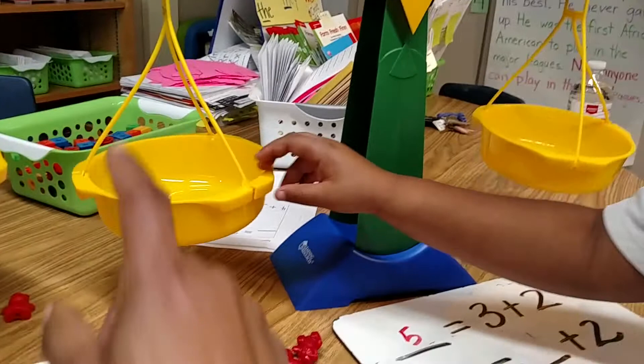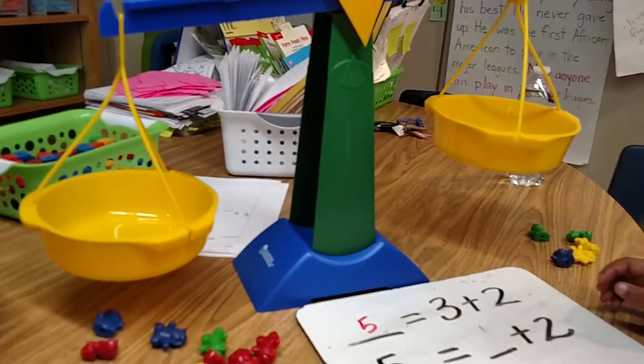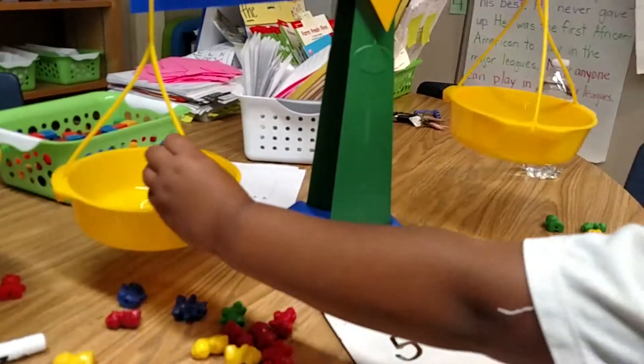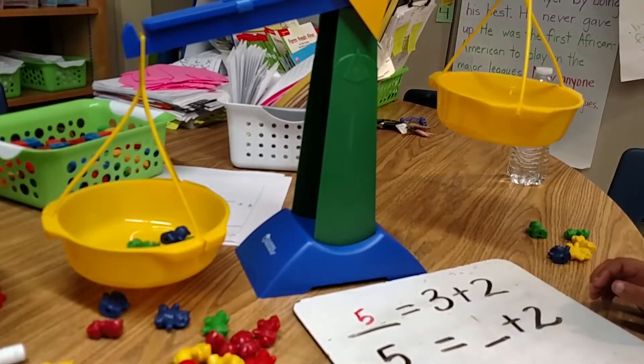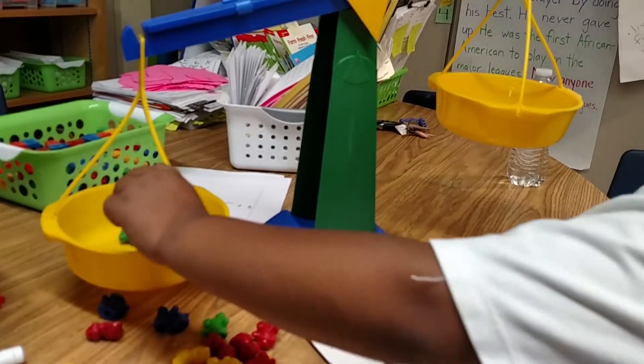Okay, so how many are going to go on the left side? Okay, go ahead. Count it out. Three, four, five. Nice.